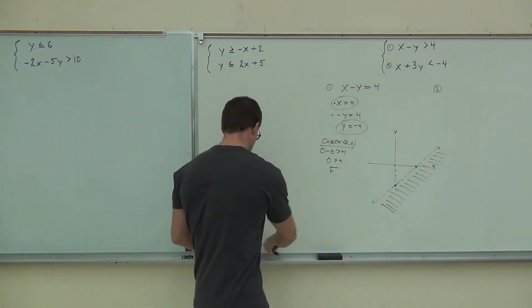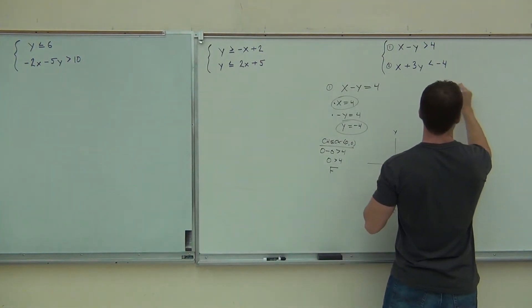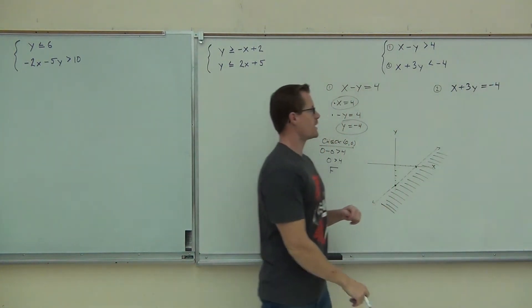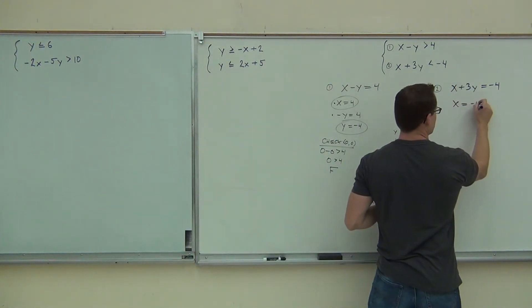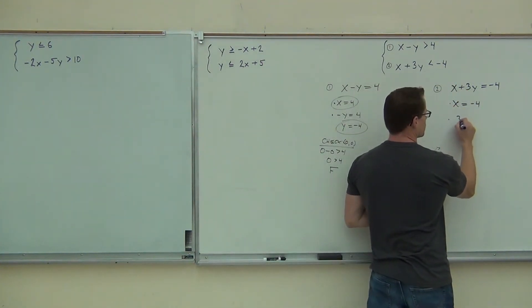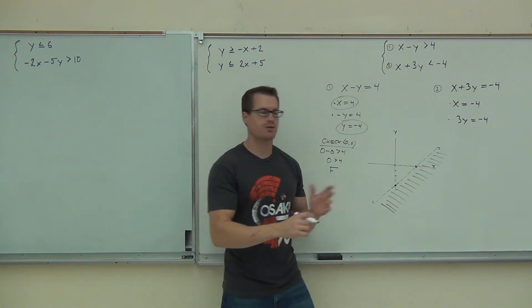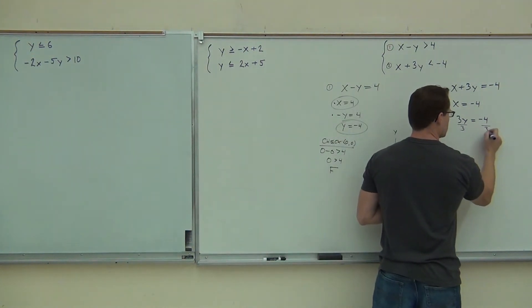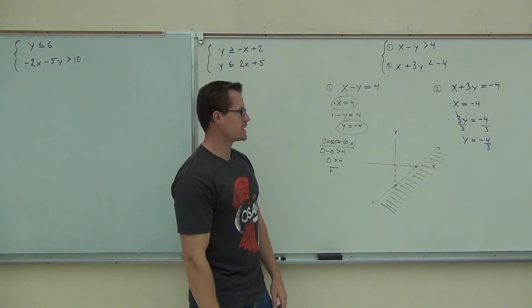Okay, next up. Number two. Number two, we have the same exact idea. We're just doing this process twice. So we're going to temporarily set it equal. So x plus 3y equals negative four. Cover up everything but the x to find the x-intercept. So we're going to have x equals negative four. No problem. Cover up everything but the y to find the y-intercept. We've got 3y equals negative four. In this case though, if 3y equals negative four, we still have to divide. So we're going to divide everything by three.